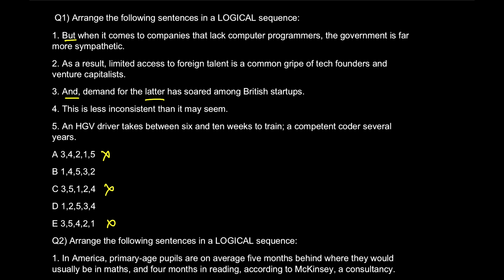So we know we have to get started with number one, which is 'but when it comes to companies that lack computer programmers, the government is far more sympathetic.' Number two says 'as a result, limited access to foreign talent is a common grip of tech founders.' Well there is no connection between one and two. So we'll go to one to four and check. Four is 'this is less inconsistent than it may seem.' This refers to 'the government is far more sympathetic.' Therefore my correct answer for this question is option B.